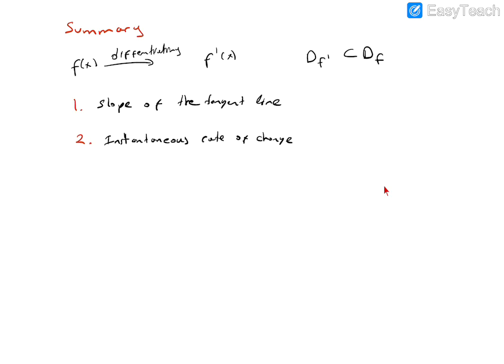Second interpretation: instantaneous rate of change. For each x in the domain of f prime, f prime of x is the instantaneous rate of change of y, which equals f of x, with respect to x. And if f of x is the position function, then f of x is the position of some moving object at time x, and v equals f prime of x is the velocity of the object at that time.